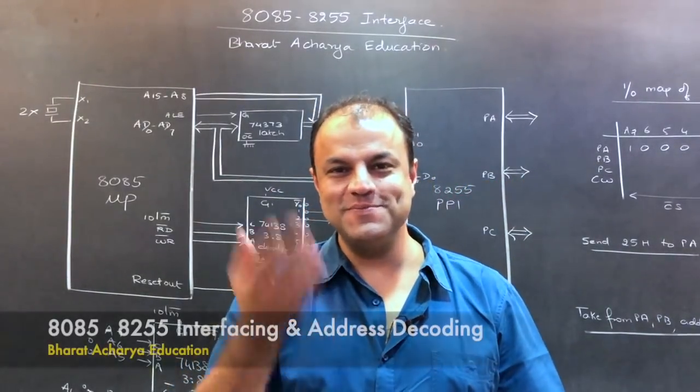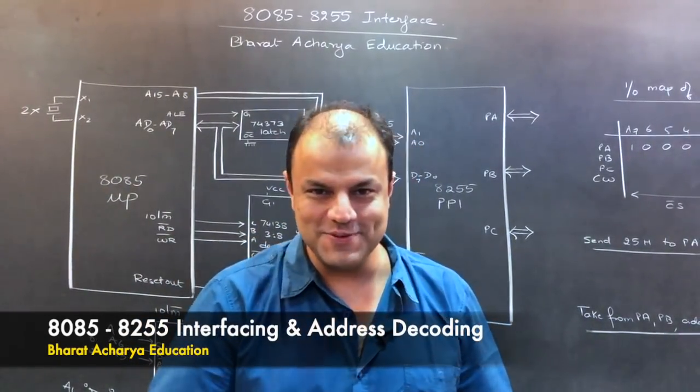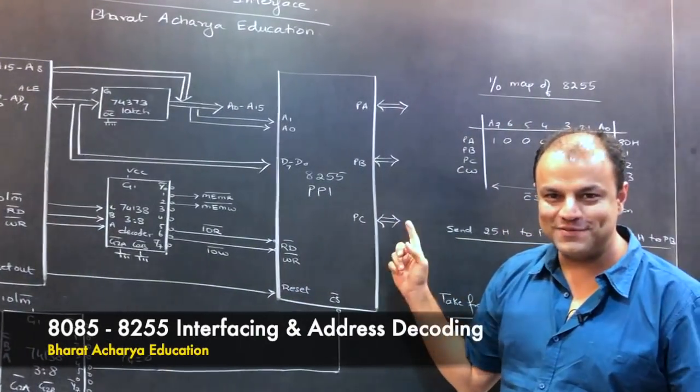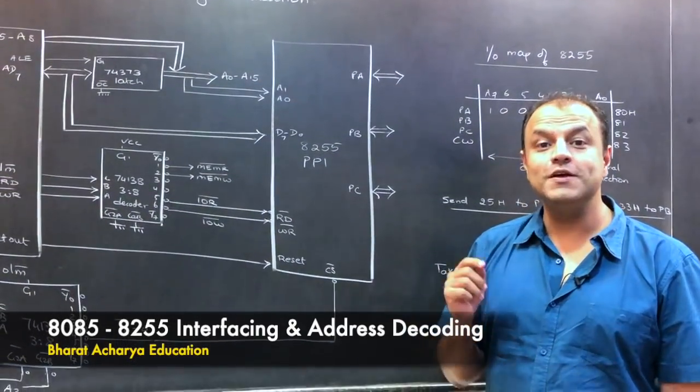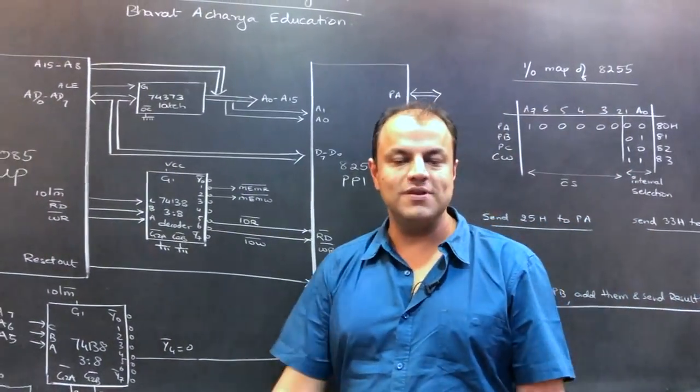Hello people, I'm Bharat Acharya. Welcome to our new video. So in today's video, we're going to learn the interface between 8085 microprocessor and 8255. Now you know what is 8255? It's called Programmable Peripheral Interface, PPI in short. What does that mean?